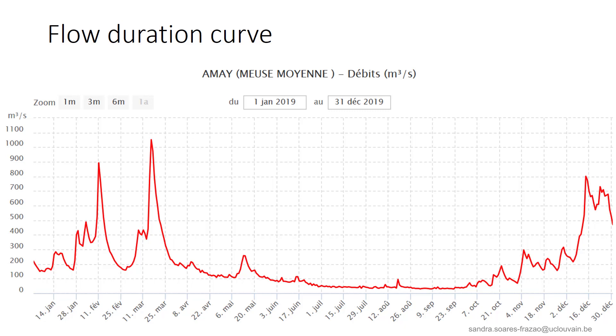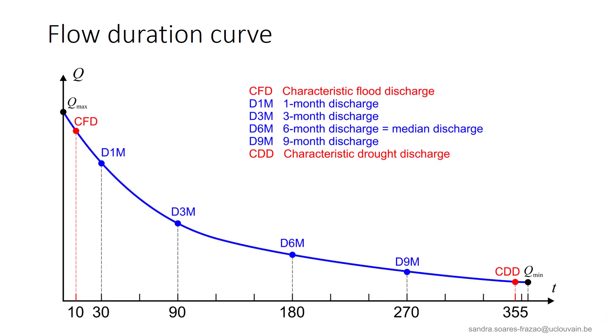Let's come to the flow duration curve. This is a method used to represent the daily discharges in a sorted way. Let us consider the measured discharges in 2019 at Amais, along the Meuse river. The maximum daily discharge is 1051 m3 per second on the 15th of March. Instead of the simple sequence of daily discharges, it is often more interesting to rank the discharges from the largest to the smallest value. This is the flow duration curve.